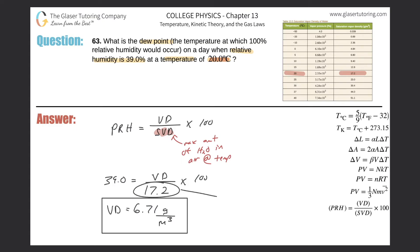So this is the vapor density. This makes sense, right? If this is the maximum density of water vapor that can be dissolved in the air, and the relative humidity is only at 39%, that means the actual amount of water vapor in the air would be less than the maximum.